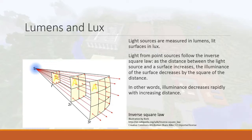This diagram illustrates the inverse square law. Light sources are measured in lumens, lit surfaces in lux. Lights from point sources follow the inverse square law: as the distance between the light source and the surface increases, the illuminance of the surface decreases by the square of the distance.